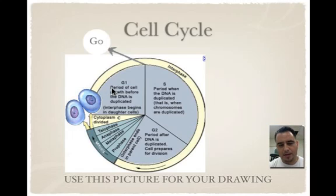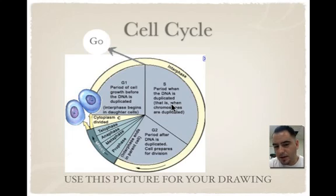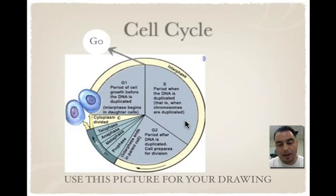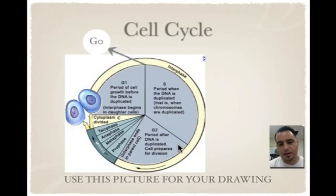A quick review: in interphase, the first part is G1, and the cell is just growing. Think of G as grow. In S phase, the DNA is duplicated or synthesized — the DNA is copied, also called replication. The chromosomes are duplicated. Then you have G2, where the cell is going to grow a little bit more and prepare for cell division.